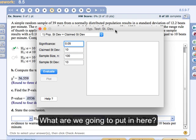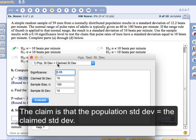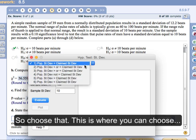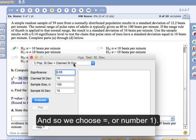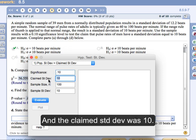So what are we going to put in here? Well, the claim is that the population standard deviation equals the claimed standard deviation. So we put that as, we choose that. This is where you can choose. And so we choose equals, Number 1. The significance level given to us was 0.10. And the claimed standard deviation was 10.